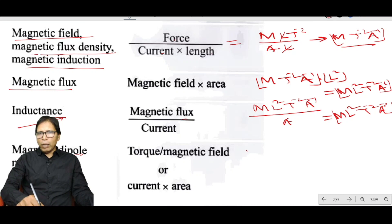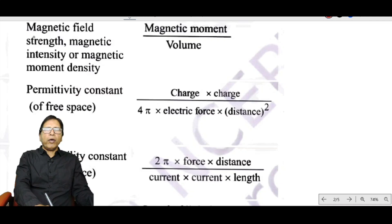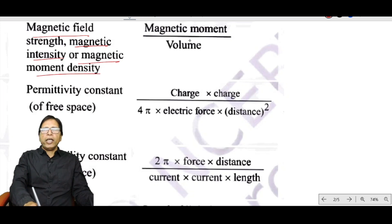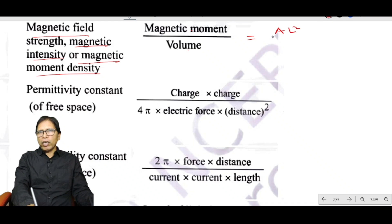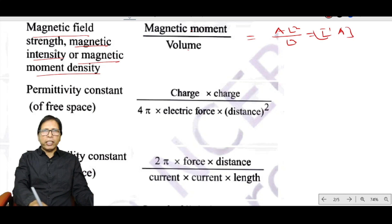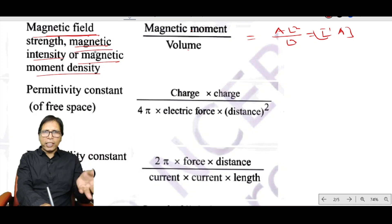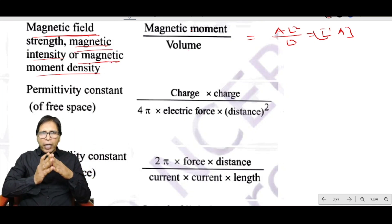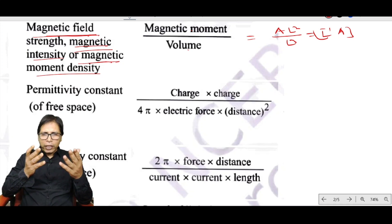Magnetic dipole moment equals pole strength × length, giving dimension AL². Magnetic field strength (magnetic intensity or magnetic moment density) equals magnetic moment divided by volume: AL² ÷ L³ = AL⁻¹.